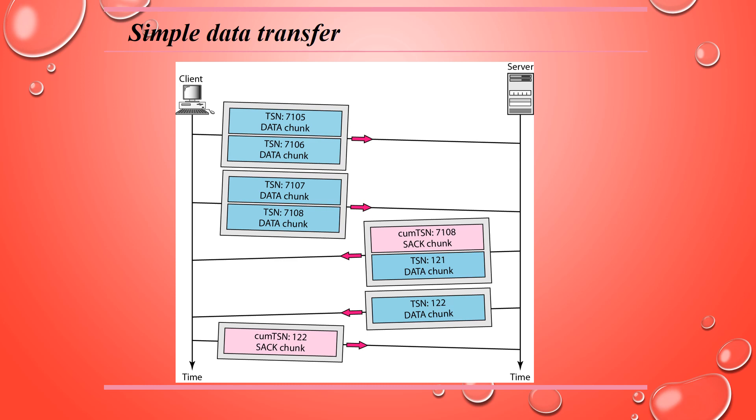In multi-stream delivery, SCTP distinguishes between data transfer and data delivery. TSN numbers handle data transfer — the movement of data chunks between source and destination. Delivery of data chunks is controlled by SI (Stream Identifier) and SSN (Stream Sequence Number). SCTP can support multiple streams; the sender process can define different streams and a message belongs to one stream. Regarding fragmentation, although SCTP shares this term with IP, fragmentation in IP occurs at the network layer, while SCTP fragmentation occurs at the transport layer.